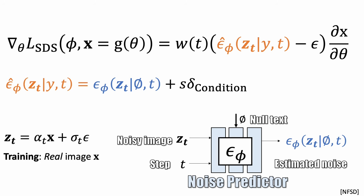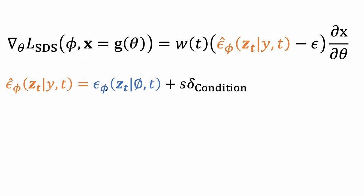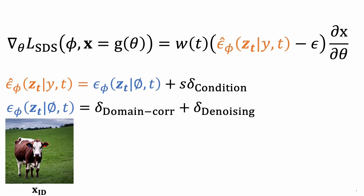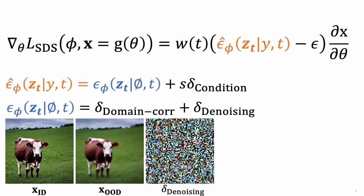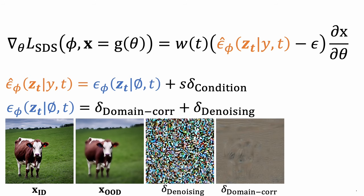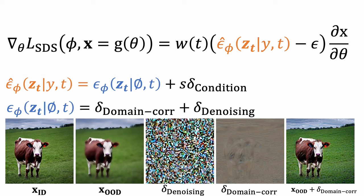During the score distillation sampling, the image x is a rendered image from the current 3D representation. This means that the rendered images are considered out-of-domain for the noise prediction model. Here is an example. When we use a noisy version of a natural image as input, here is the noise predicted by the unconditional model. We can see the predicted noise does not reflect the content of the input. Let's try this out-of-domain image. It has the same but slightly blurrier content. By subtracting delta-denoising from the prediction, we get the domain-correction component. Adding these domain-correction components to the input gives us more realistic results.